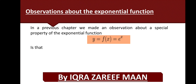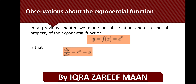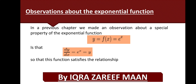First, we discuss some important facts related to exponential functions. We consider a special type of exponential function y = f(x), where y is the dependent variable and x is the independent variable. We consider the function y = e^x. From our chapter on derivatives, we know that the derivative of e^x is e^x itself. Since e^x equals y, we get the relationship dy/dx = y.